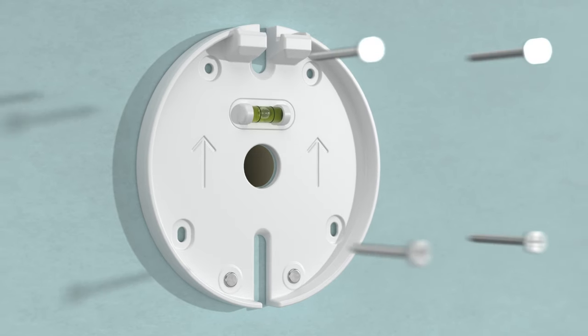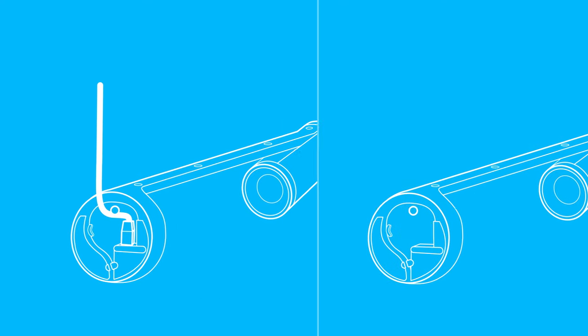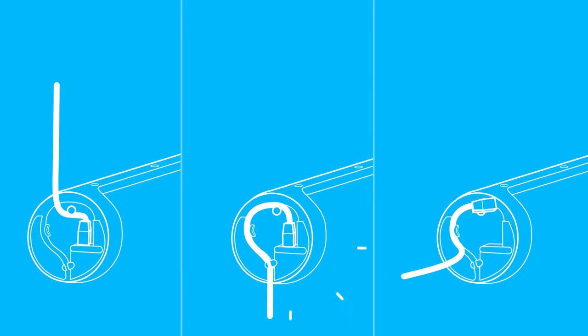We've also thought through the entire setup process so it's easy to install in any room. Scribe comes with everything you need to quickly get it up and running. There's even a level built into the base to help you get it perfectly aligned. And thanks to innovative cable channels, you can route the cable up the ceiling, down the wall, or through the wall for a super clean look.